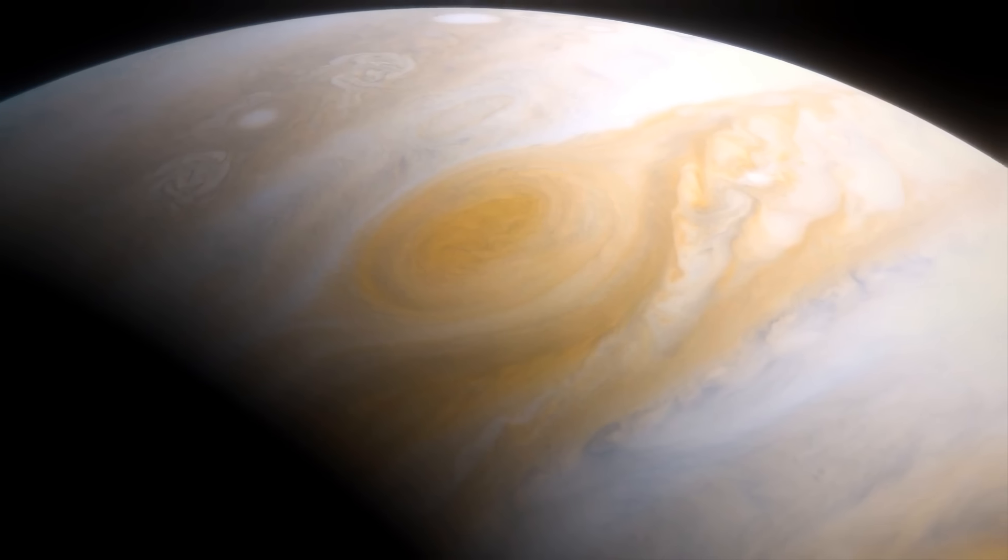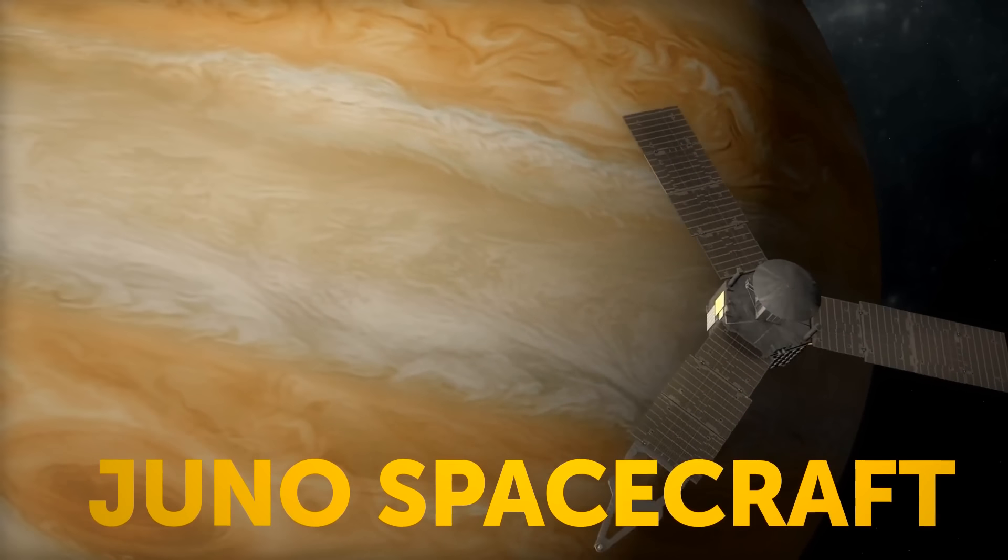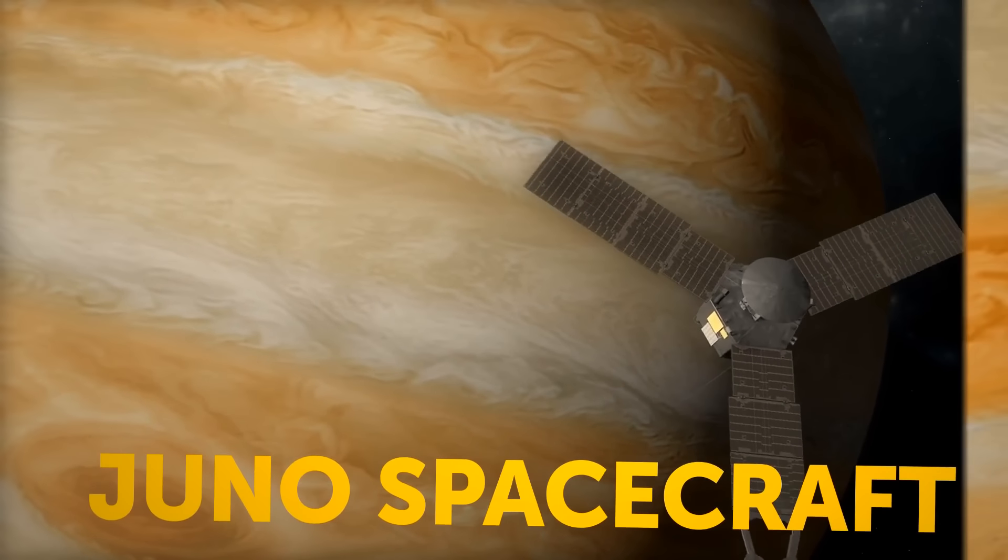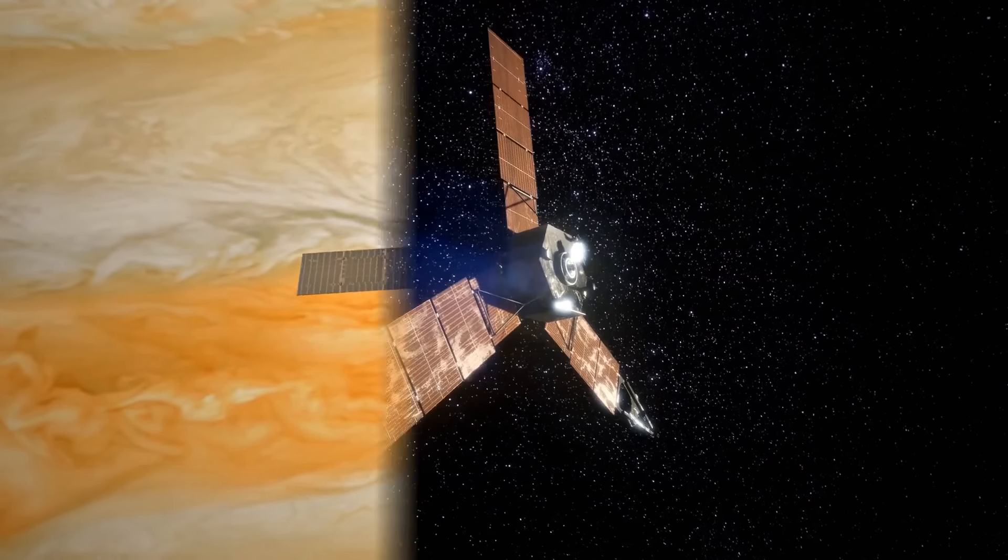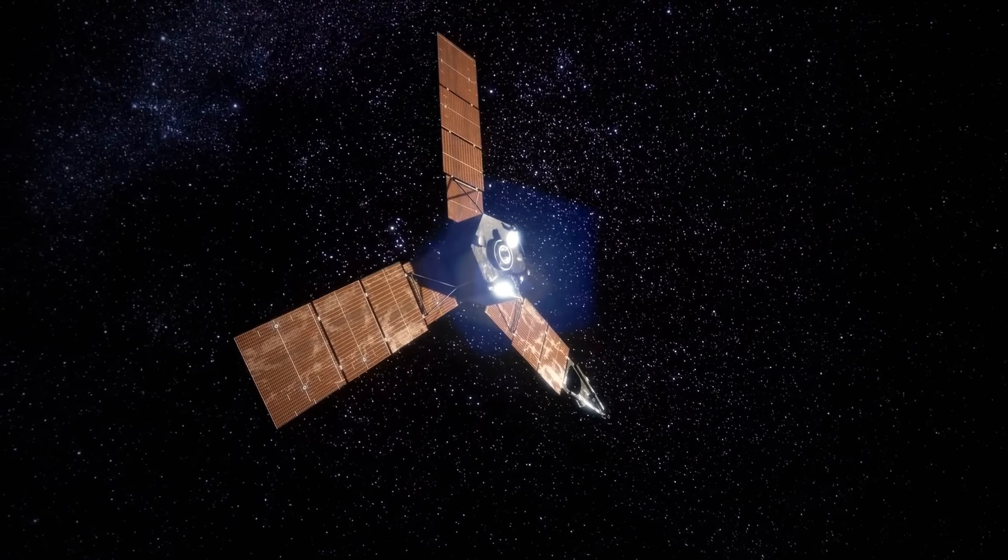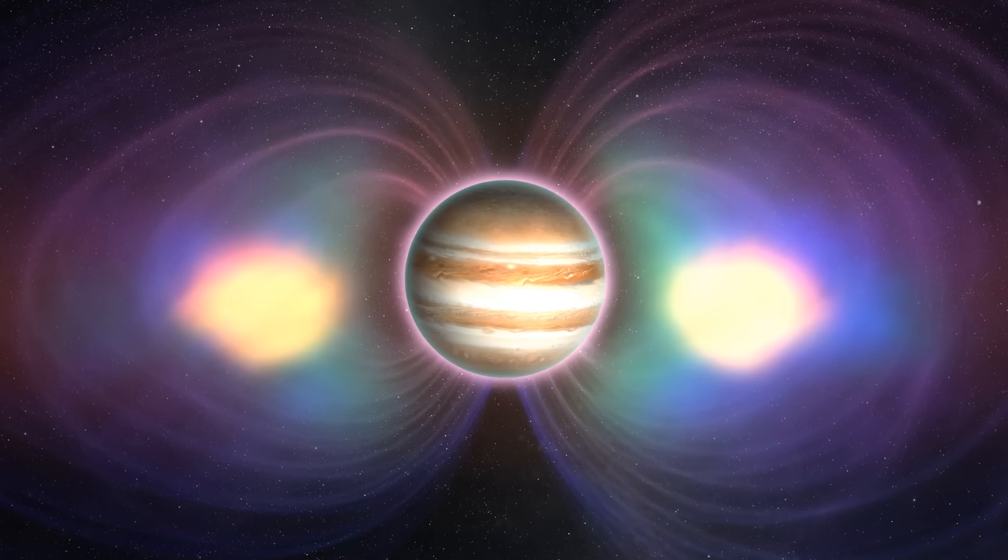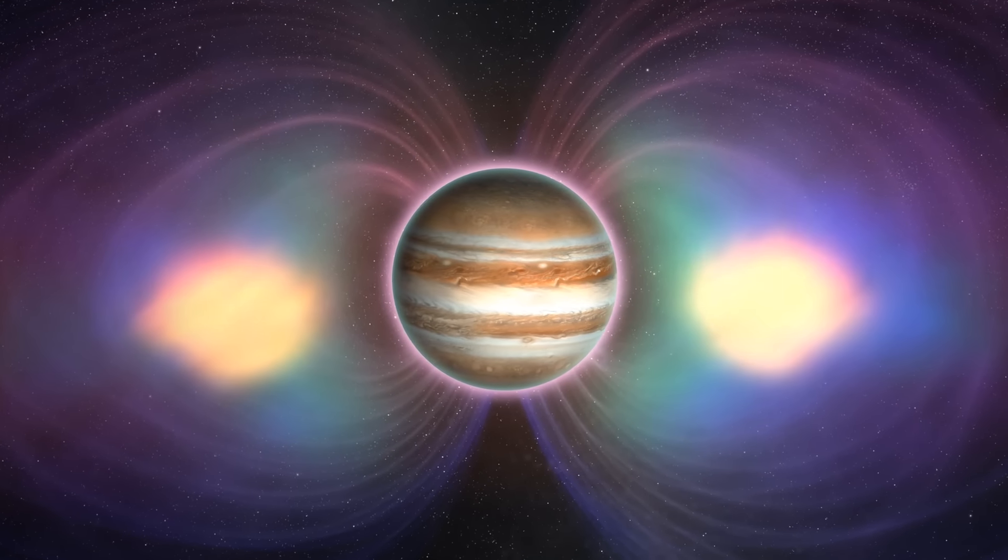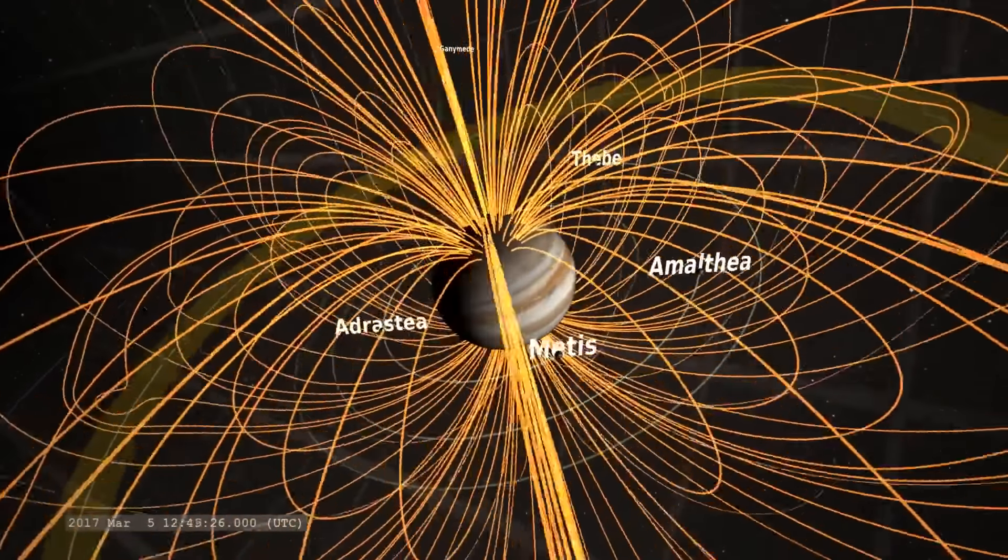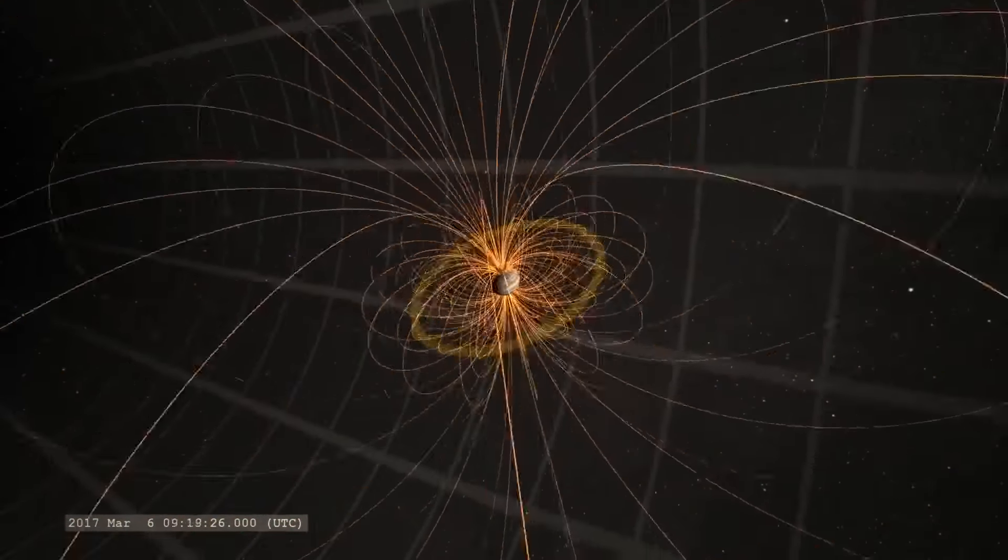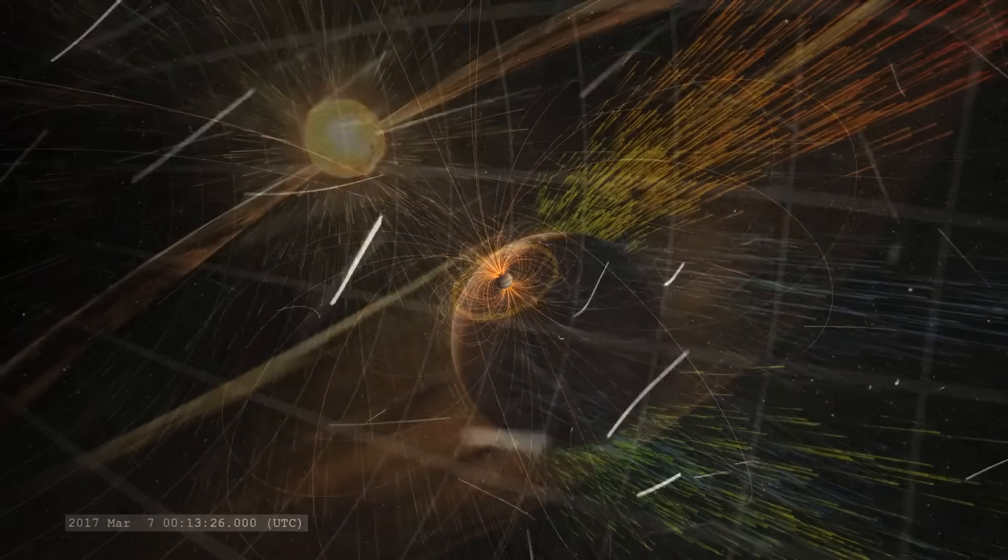Scientists have been scratching their heads, trying to figure out why this happens. So they've decided to use a special spacecraft called Juno to investigate. Since 2016, Juno has been gathering a lot of information about Jupiter, like a spy collecting clues. One of the things Juno has been looking at is Jupiter's magnetic field. Just like Earth, Jupiter has a magnetic field - like an invisible bubble that surrounds the planet, extending to space. This magnetic field is really important because it protects the planet and everything on it.